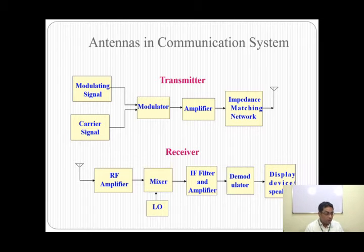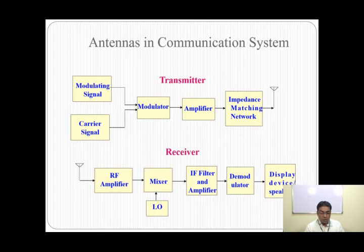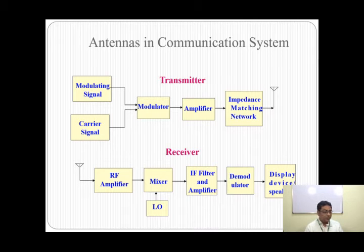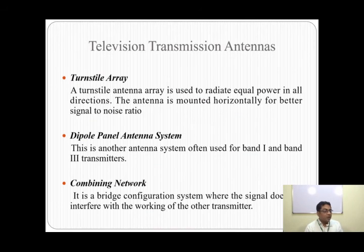After the IF stage, a demodulator is used, which is the reverse of the modulator in the transmitter. If it is amplitude modulation, it will be amplitude demodulation; if it is digital modulation, it will be digital demodulation. The output is then connected to a display device or speaker depending on the application. This concludes the detailed explanation of antennas in a wireless communication system.